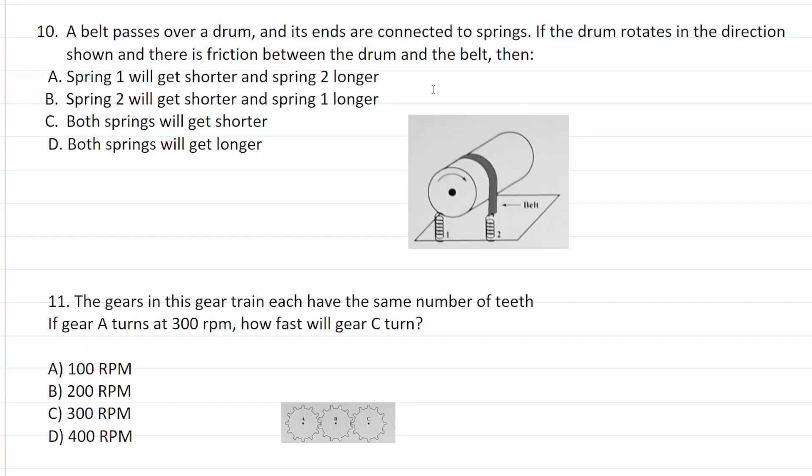Number 10 says a belt passes over a drum and its ends are connected to springs. If the drum rotates in the direction shown and there is friction between the drum and the belt, then. All right, so this drum is turning this way according to our diagram here. So that means it's going to be pulling this spring this way. So this spring is going to be expanding this way. And at the same time, to keep this tension on this belt, this spring is going to be compressing. That is, it's going to get smaller. So spring one is going to get longer and spring two is going to get shorter. Let's see where that is. Spring one will get longer. Spring two will get shorter. So this one is B.